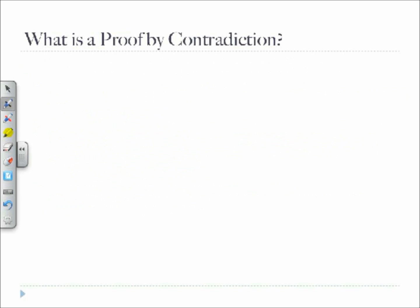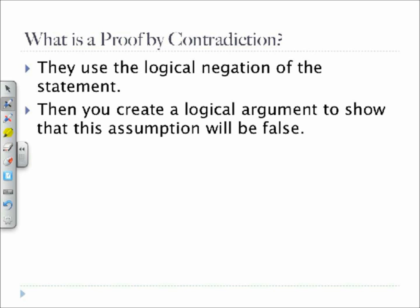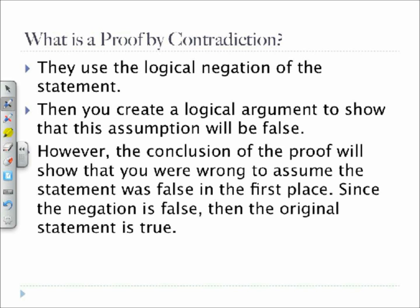What is a proof by contradiction? Proof by contradiction is a form of indirect proof. It does not prove a conclusion directly. Instead, you assume that the statement you are trying to prove is false. To do this, you first use the logical negation of the statement. Then, you create a logical argument to show that this assumption will be false. And lastly, you will find that the conclusion of the proof will show that you were wrong to assume the statement was false in the first place. And since the negation is false, then the original statement is true.